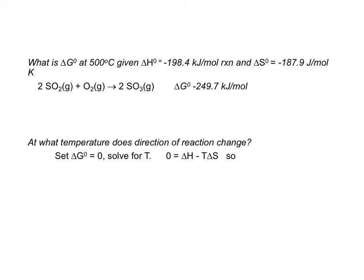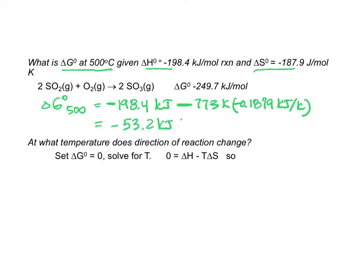To wrap this section up let's just do a calculation or two to illustrate what needs to be learned. Here it says what is the delta G at 500 degrees centigrade. We are given delta H equals minus 198.4 kJ/mol and delta S equals minus 187.9 J/mol K. So we will assume the delta H and delta S do not change. We will say minus 198.4 kilojoules and we will subtract from that the temperature which is 773 kelvin and we will multiply it by the entropy in terms of kilojoules, 0.1879 kilojoules per kelvin. When I crunch my number through I come up with a value of minus 53.2 kilojoules per mole.